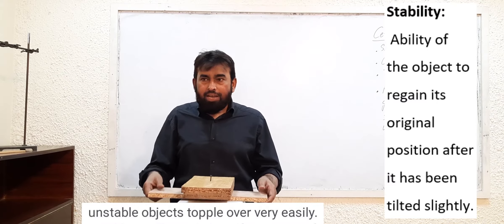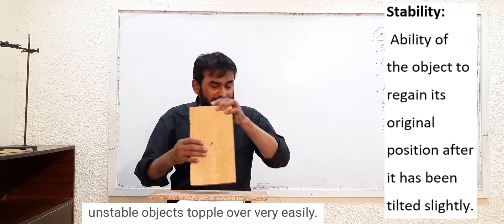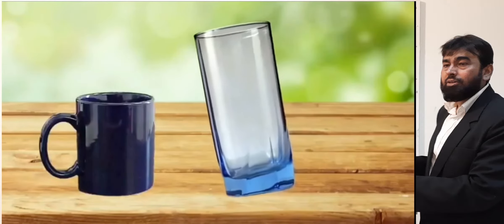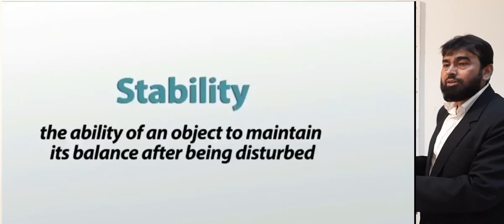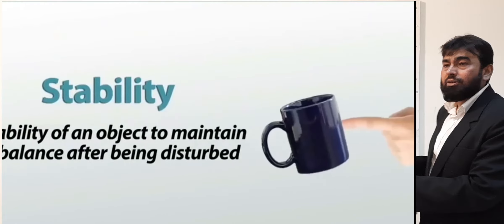The stability depends upon the height of the center of gravity from the surface on which it is lying. A glass is less stable because its center of gravity is lying higher, so it may fall very easily. A mug is more stable because its center of gravity is at a lesser height compared to that of the glass.